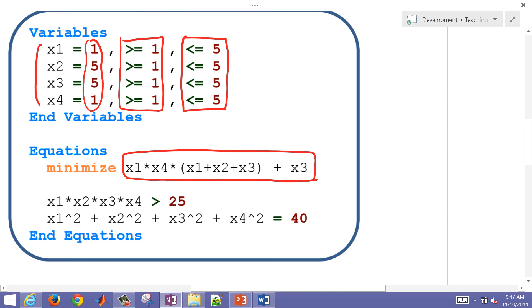We have our first constraint, which is that the product of all of those variables has to be greater than 25. And then the sum of the squares of those has to also equal 40. So this is going to be our inequality constraint, and then this is our equality constraint. And finally, our objective.